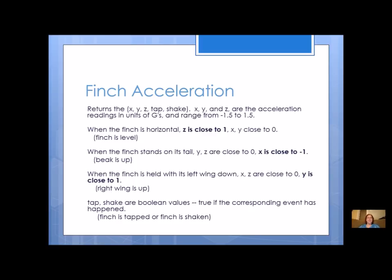This time it's going to return five values: X, Y, and Z — that's your three-dimensional orientation — and then also tap and shake. X, Y, and Z are going to read a number between negative 1.5 and 1.5. If the Finch is horizontal, meaning level, Z is going to be close to 1 but X and Y are close to zero. If the Finch stands on its tail with the beak up, Y and Z are close to zero but X is going to be close to negative 1.